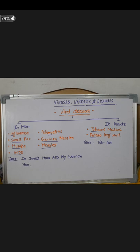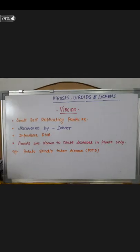In plants, viral diseases include Tobacco Mosaic and Potato Leaf Roll. These are easy to remember. Next, we will talk about viroids — this is very important.